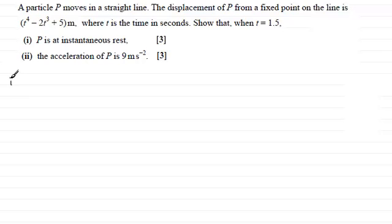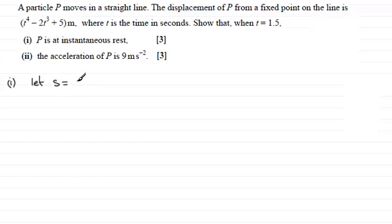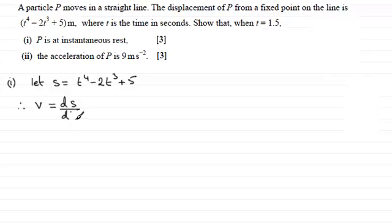So first of all, if I'm to work out that p is at an instantaneous rest when t equals 1.5, then because we've got the displacement given as a function of time t, what we've got to do to get v is to differentiate with respect to t. So let s represent that displacement, which is t to the power 4 minus 2t cubed plus 5. Therefore the velocity v is given by the rate of change of displacement s with respect to time. Differentiating gives me 4t cubed, and then for the second term minus 6t squared.